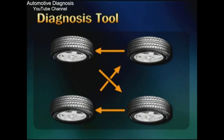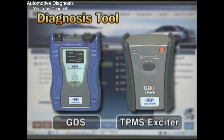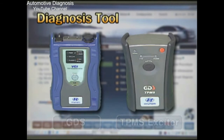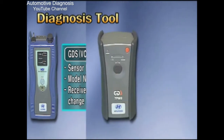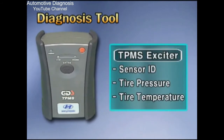If tire position is exchanged or the sensor is replaced, the new sensor position and ID should be entered using the GDS and TPMS Exciter. The GDS and VCI are used for entering sensor ID and model name, and for changing the receiver mode. The GDS and TPMS Exciter is used for reading the sensor ID, pressure, and temperature.